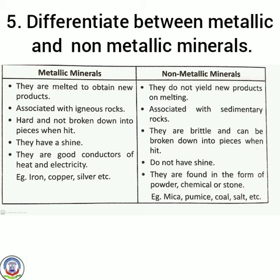Metallic minerals are good conductors of heat and electricity. Examples: iron, copper, silver, etc. Non-metallic minerals are found in the form of powder, chemical or stone. Examples: mica, pumice, coal, salt, etc.